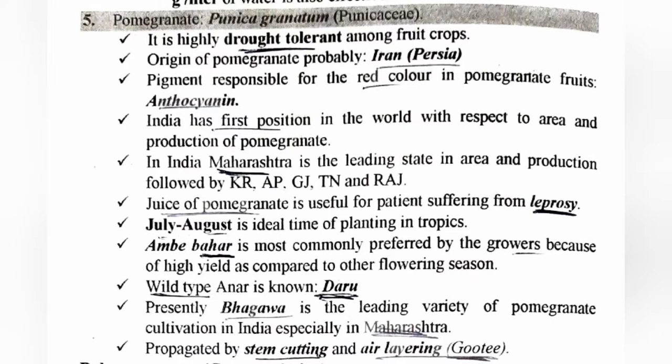Pomegranate juice is very useful for patients suffering from leprosy. July-August is considered the ideal time for planting in tropical regions. Ambe bahaar, which is the flowering season, is mostly preferred by growers because the yield is very good at that time. The wild type of pomegranate is called 'Daru'.